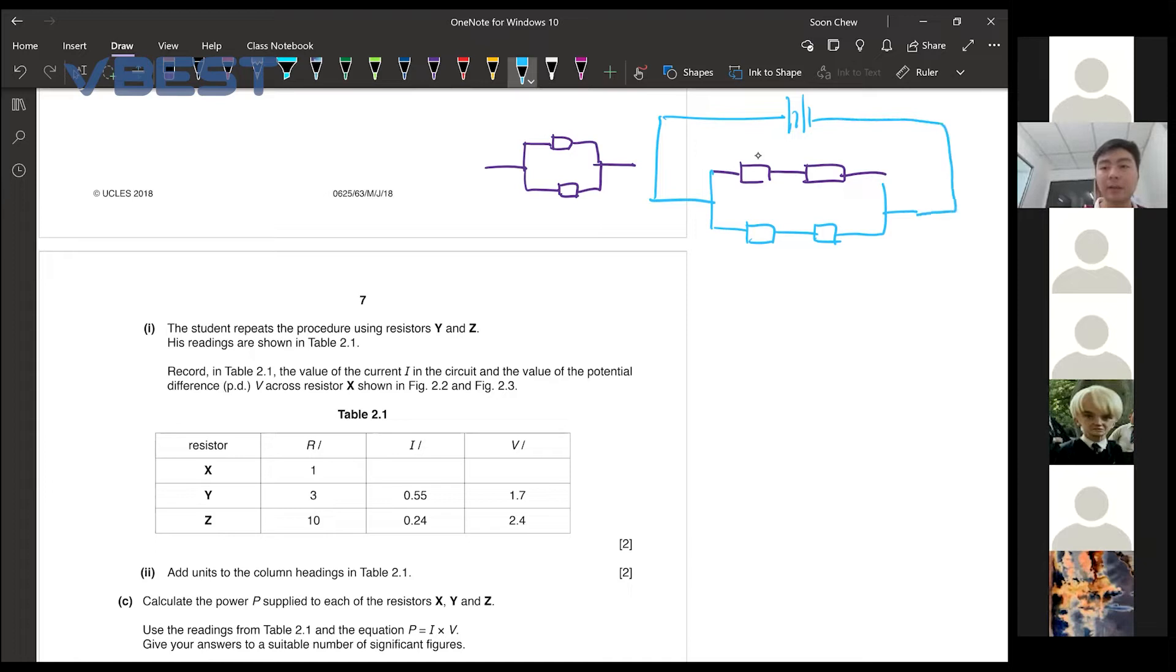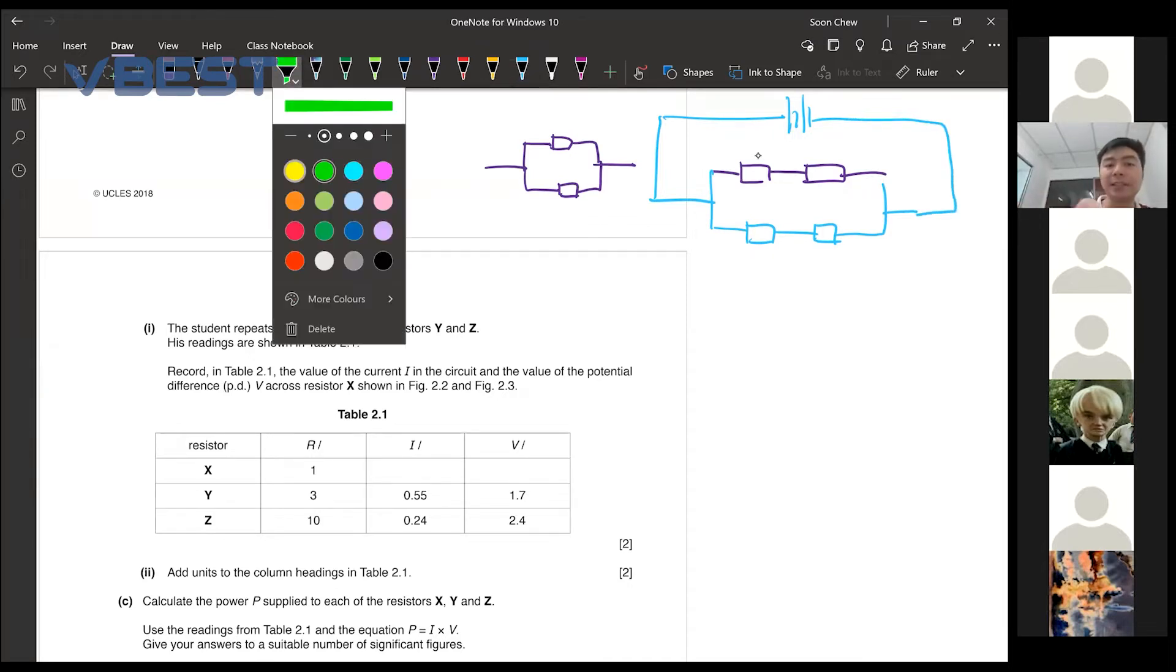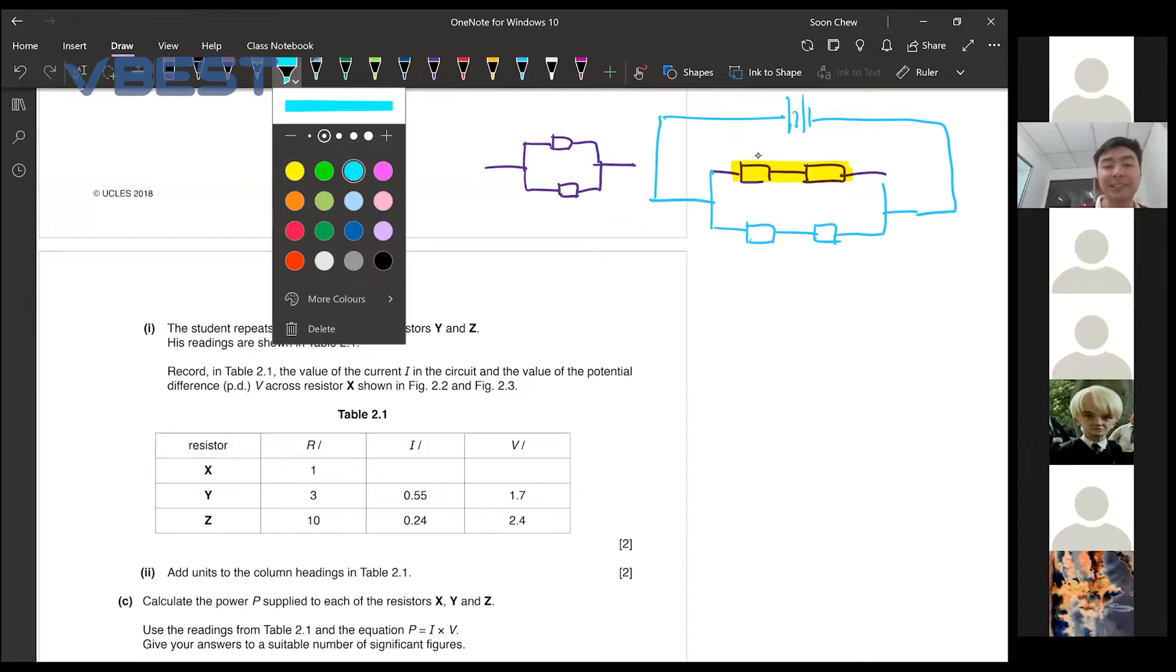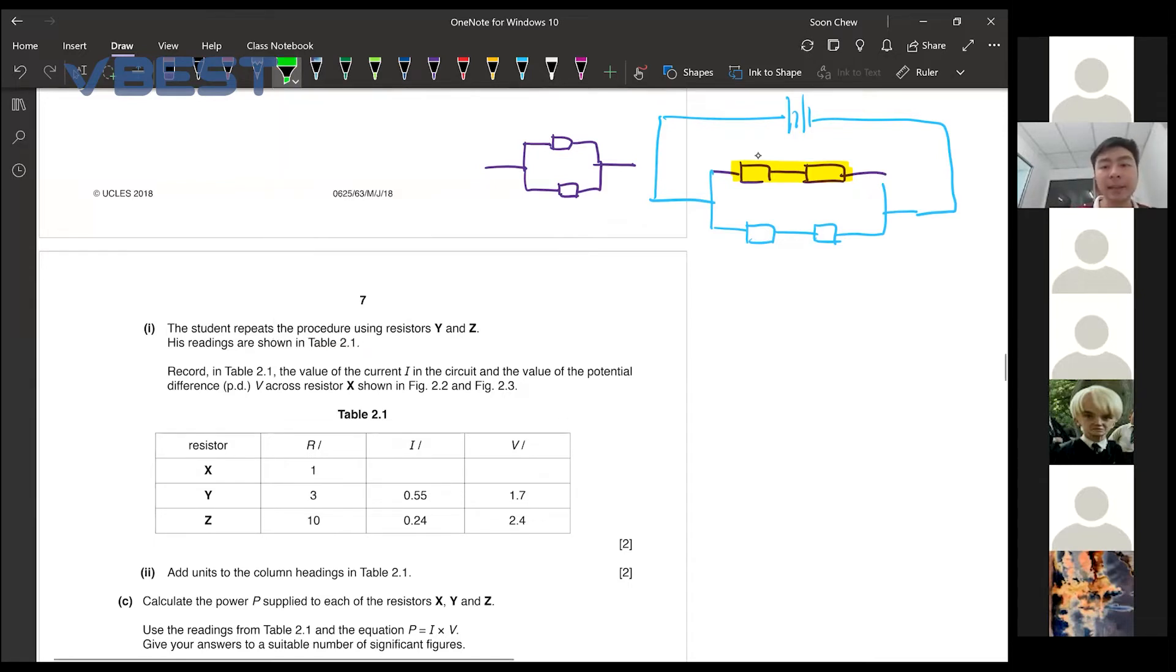Now, if you guys got this type of circuit, right? How you interpret the circuit is like this. The two purple color ones over here, they are in the same branch. So they must be in series with one another. Okay. Then the bottom two over here, they are also in series with one another. But if we are talking about the top branch with the bottom branch, then they are parallel with each other.